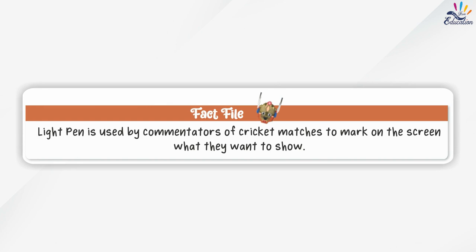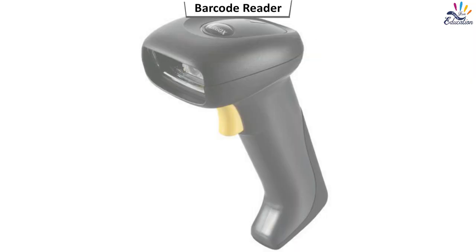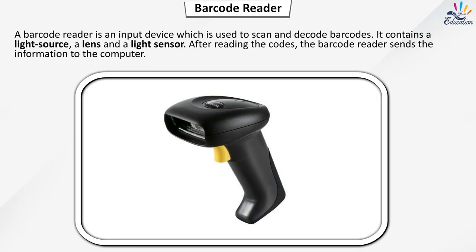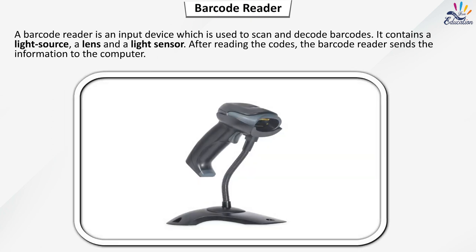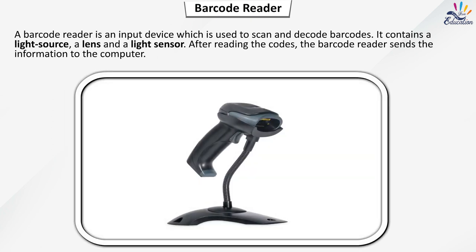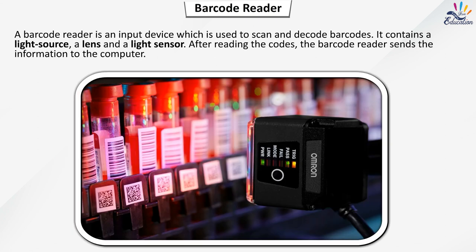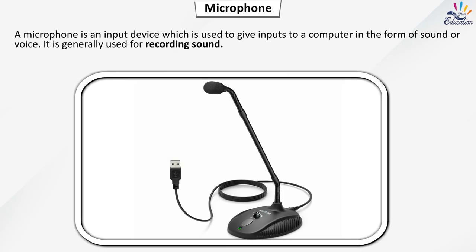Light pen is used by commentators of cricket matches to mark on the screen what they want to show. A barcode reader is an input device which is used to scan and decode barcodes. It contains a light source, lens and a light sensor. After reading the codes, the barcode reader sends the information to the computer. A microphone is an input device which is used to give inputs to a computer in the form of sound or voice.